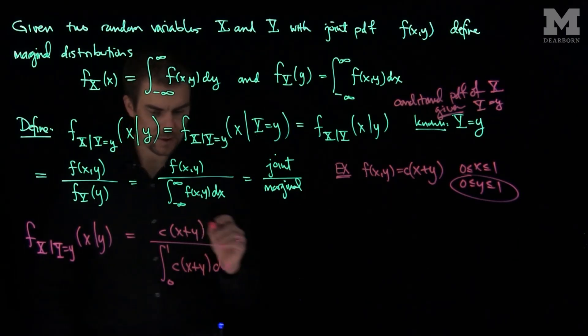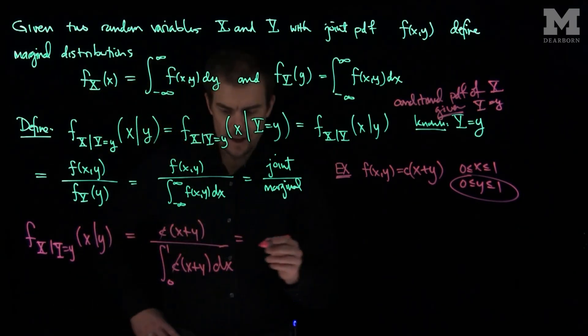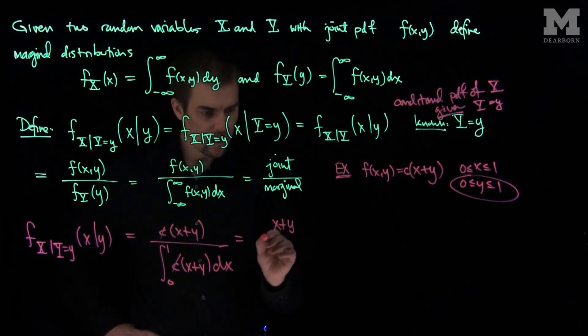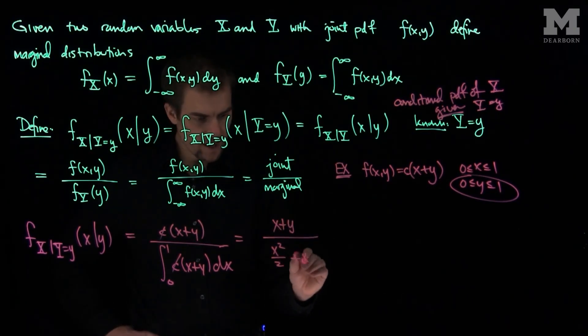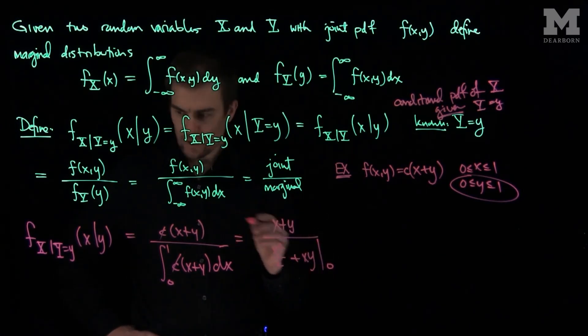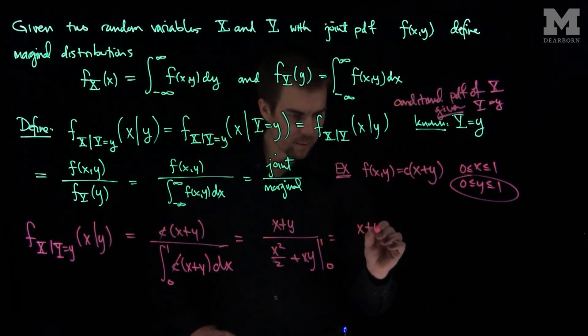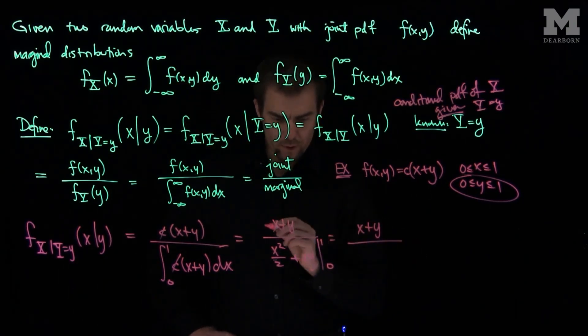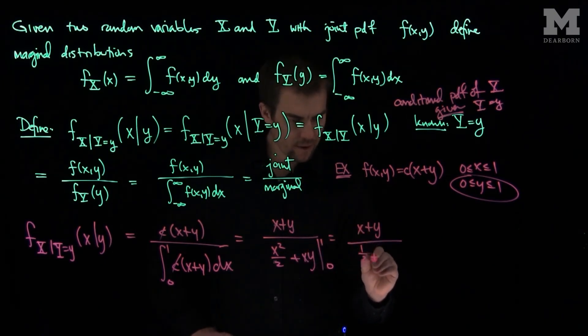So let's continue this. Notice that when we do this, the c's are going to cancel out. And so let's do this integral. So we're going to have (x+y) over, I'll have (x²/2 + xy), evaluated from x equals 0 to x equals 1. And so this will be (x+y) over, we'll have a one-half plus y. One-half plus y.